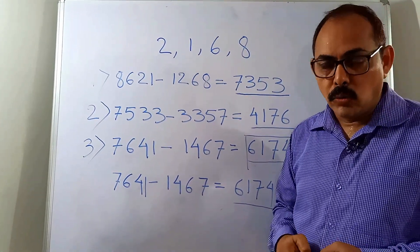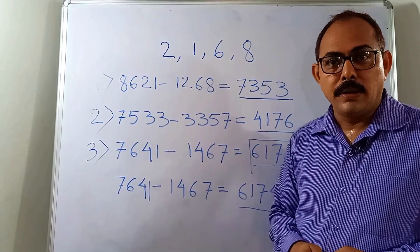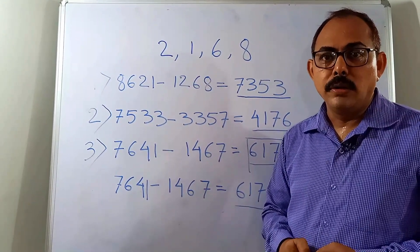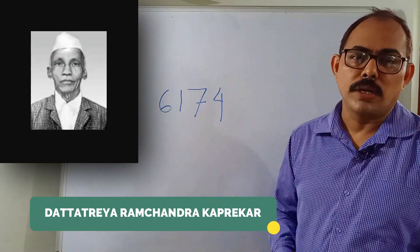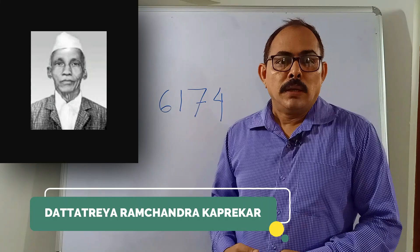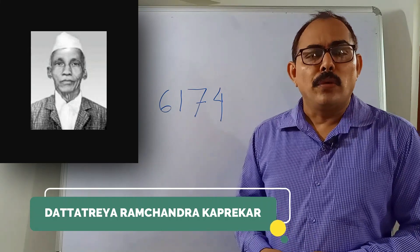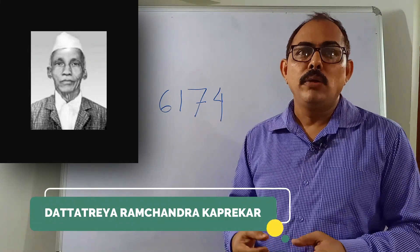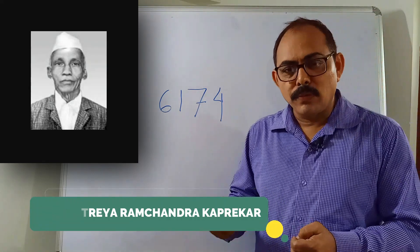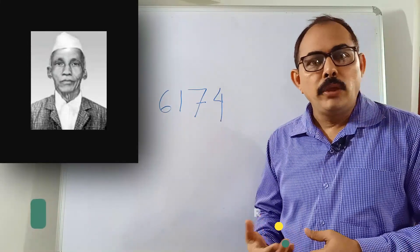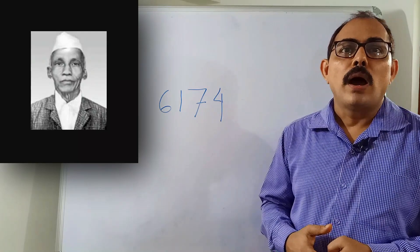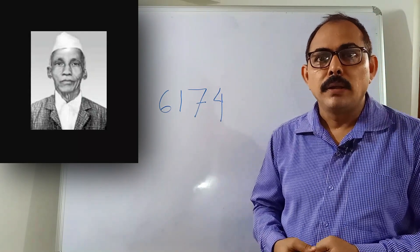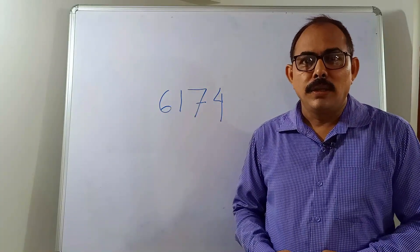Now, this brings us to the mathematician I was about to talk about — D.R. Kaprekar, Dattatreya Ramchandra Kaprekar. He was born in 1905 in a small village of Maharashtra called Dhan. He was very much interested in mathematics even as a school student and used to continuously work with numbers, though he didn't get the chance of going for higher studies in mathematics and couldn't even complete his post-graduation.